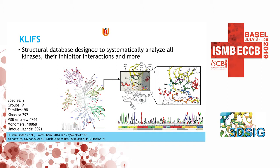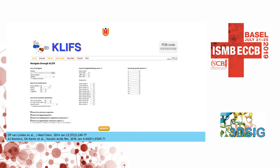Once a structure is released, it comes into the database, gets aligned to the existing CLIPS alignment, and then we annotate 85 residues in the binding site for convenience of comparing kinases. For example, the gatekeeper is on position 45, and you'll find it at that position in all kinases in the database. The DFG motif is on positions 81 to 83, and again you'll find it in all kinases. So you can very easily generate plots showing how conserved different motifs are.